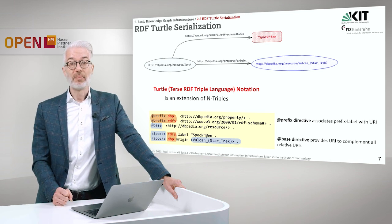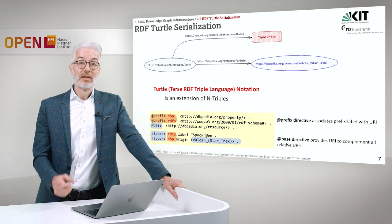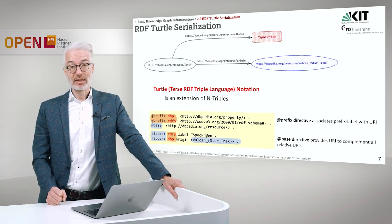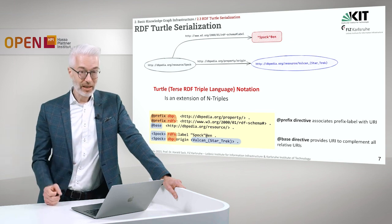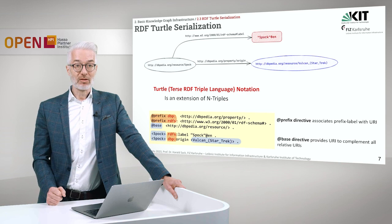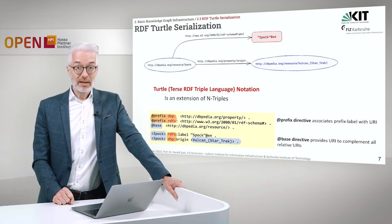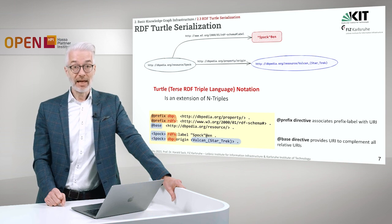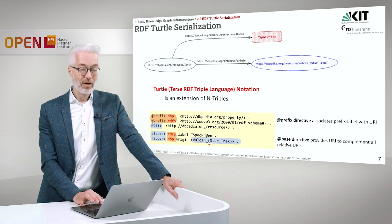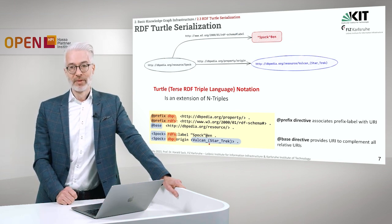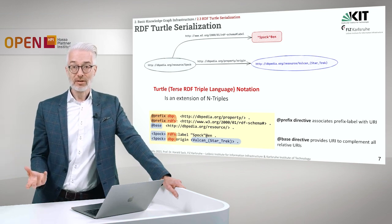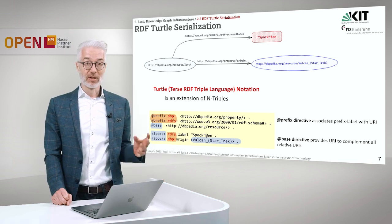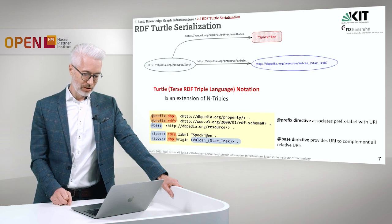The second thing is another directive called @base. With the base directive, I can give a base URI for the entire RDF file I'm currently editing — especially important if most of the things I'm defining reside in the very same namespace. When using the base directive, the suffix I'm adding behind base has to be written in angle brackets. So we have here Spock in angle brackets and Vulcan from Star Trek in angle brackets. These are abbreviations with no new semantics added — simply syntactic sugar.